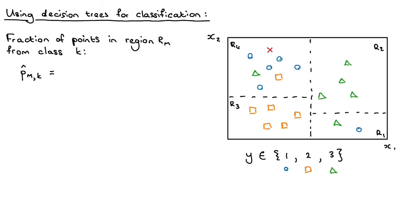And how we do that is we count the number of points in region RM with label K, and then we divide that by the total number of training points that we have in that region. So we divide by the total number of points in region RM.